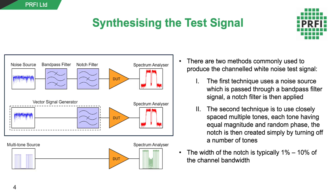There are two methods that are commonly used to produce the noise power ratio white noise test signal. The first technique uses a noise source which is passed through a bandpass filter, and then a notch filter is applied, as shown in the top diagram.